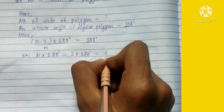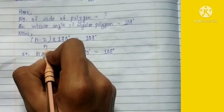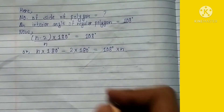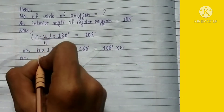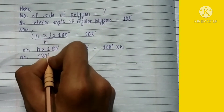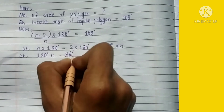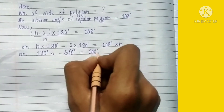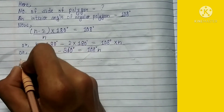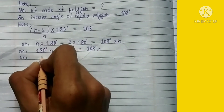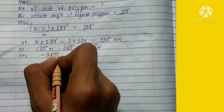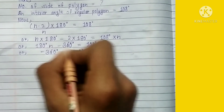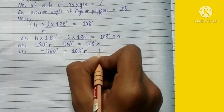Here we are going to multiply n into 180 degrees, and minus 2 into 180 degrees, equals 108 degrees multiplied by n. So 180n minus 360 degrees equals 108n.